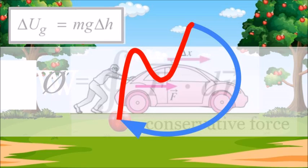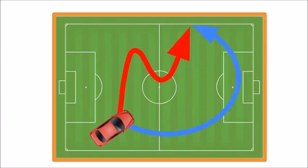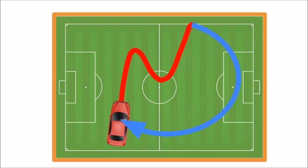A different example. Pushing a car. Here the path does matter. The blue path is longer, more friction. And a closed loop here would be no big deal. Friction still does lots of work. Friction is not conservative.